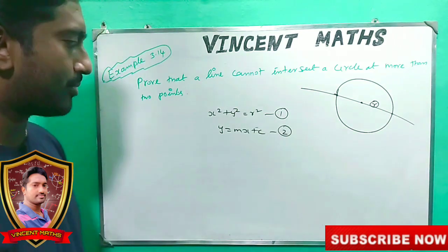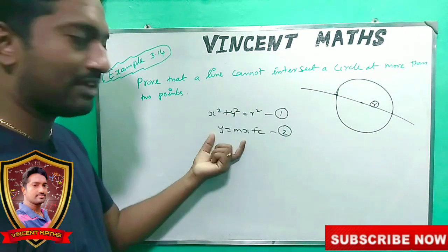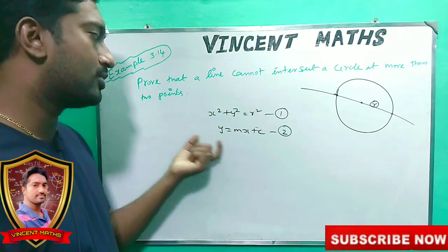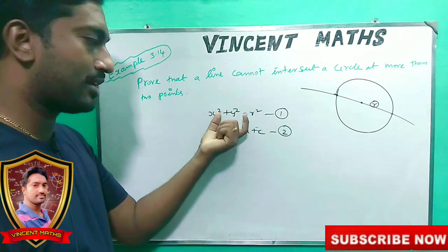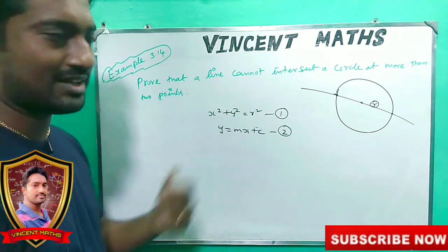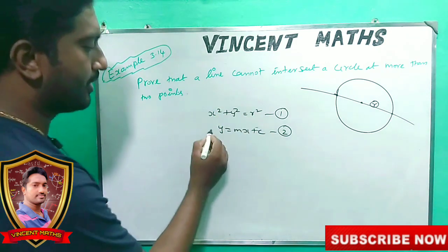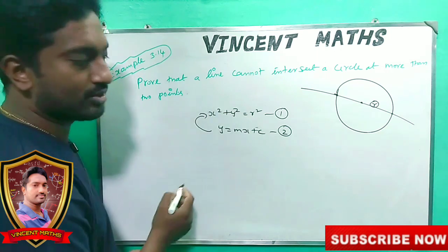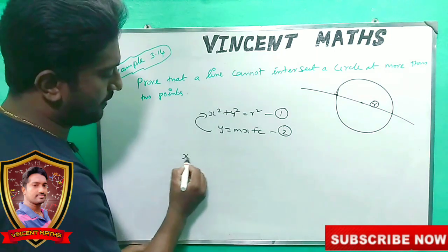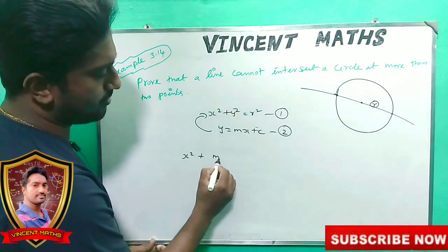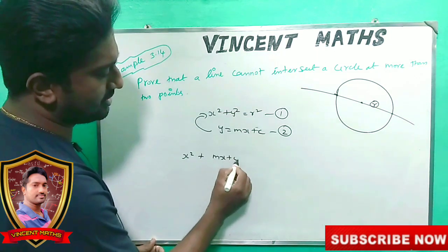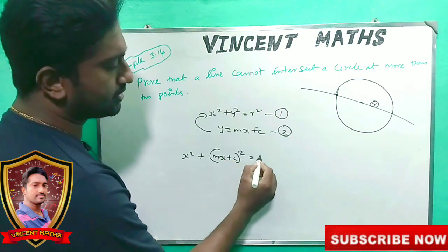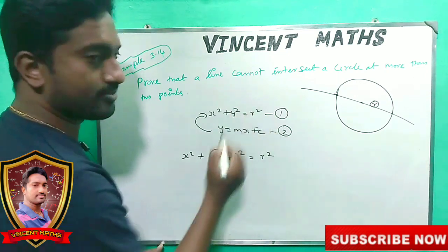What we are doing now? We will substitute equation 2 into equation 1. If we do this substitution, we get: x squared plus (mx plus c) whole squared equals r squared.